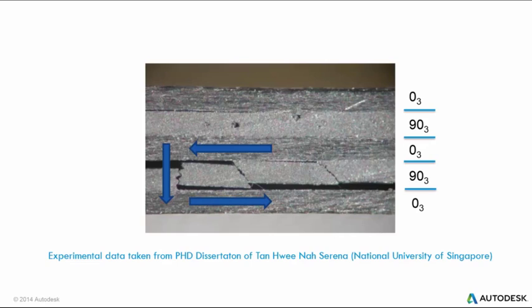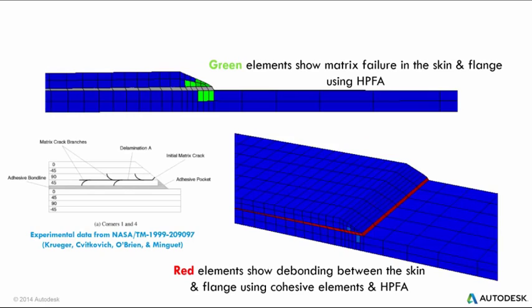Autodesk Helios PFA supports material laws for subsequent modeling of both inter- and intra-laminar failure. It supports delamination modeling by providing a material description for cohesive elements within finite element analyses. The material law allows for initiation and evolution of damage between composite plies within a structural analysis, and can simulate the effect of delamination concurrently with inter-laminar failure.